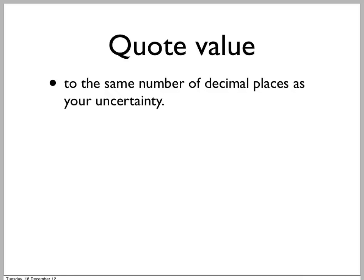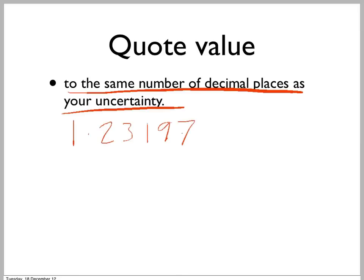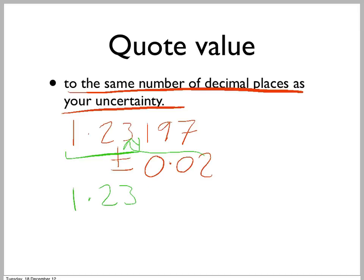That's the uncertainty. What value should you quote? Well, you go to the same number of decimal places as your uncertainty. So let's say you've worked out that something is 1.23197 plus or minus 0.02. The 0.02 is at the second decimal place, so you'd quote it to that decimal place: 1.23 plus or minus 0.02.